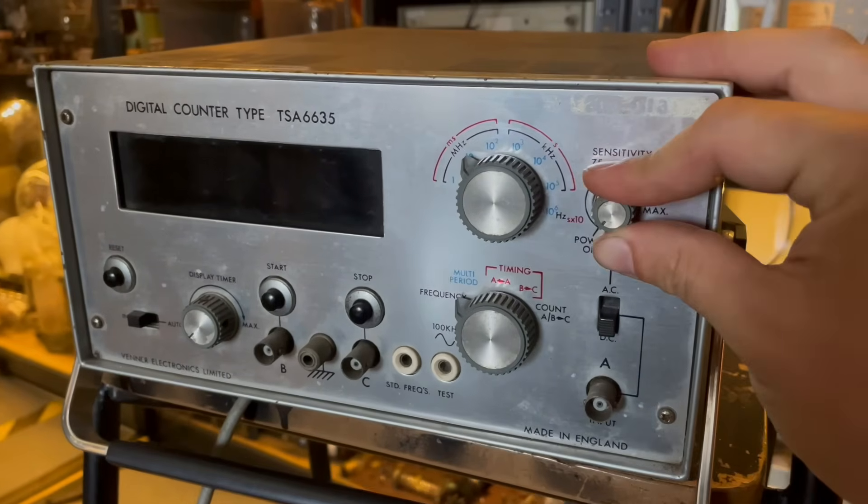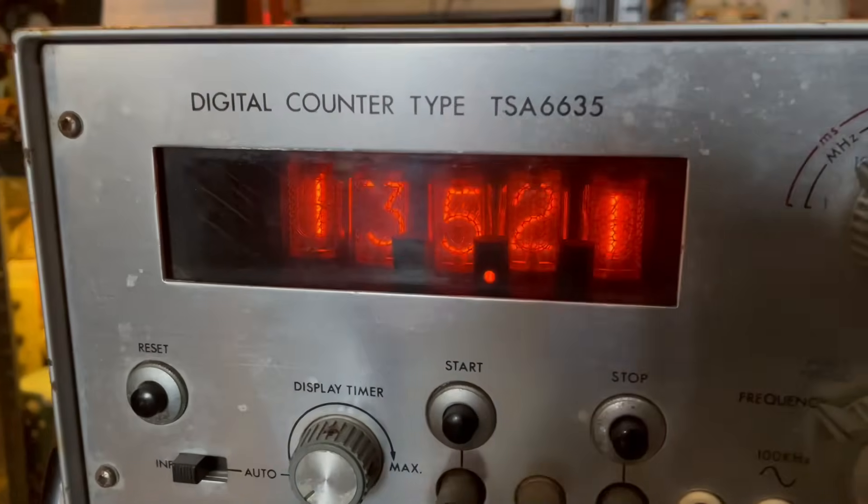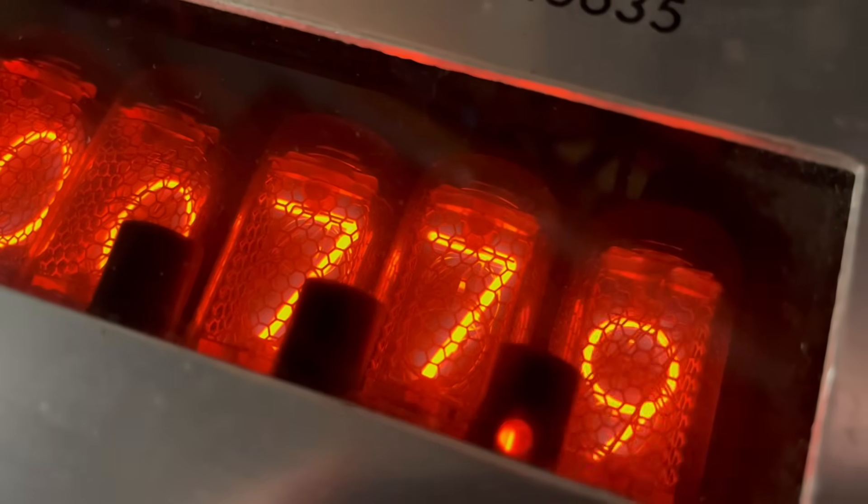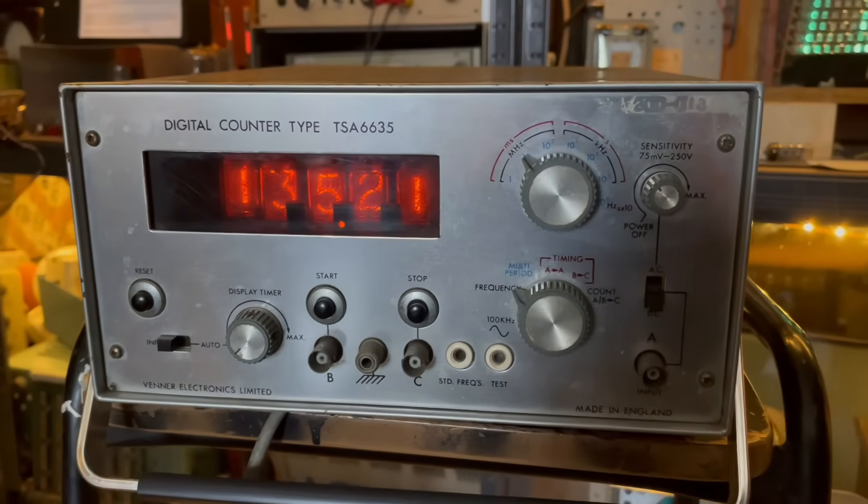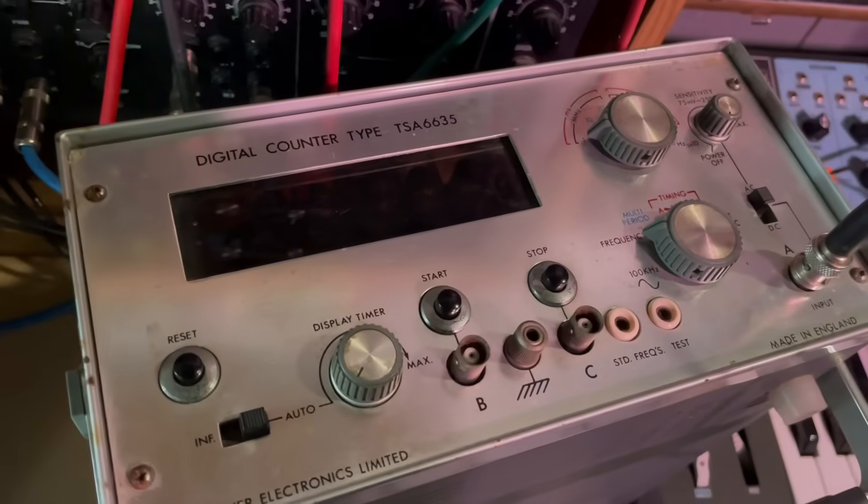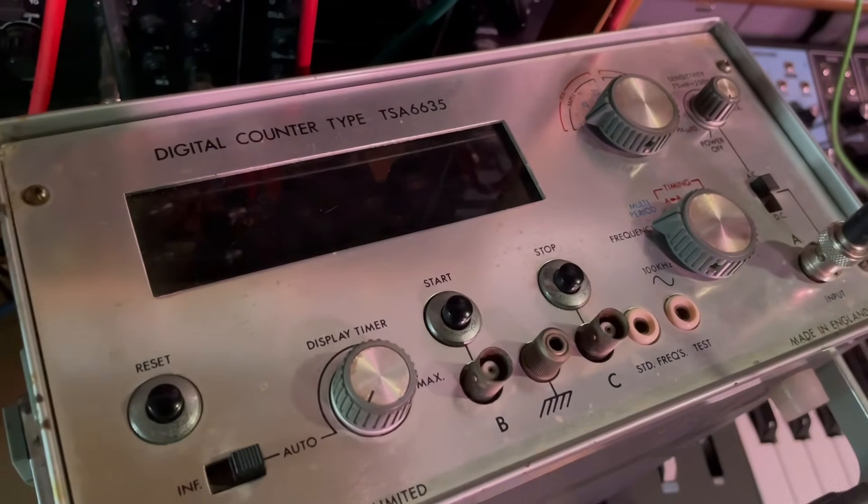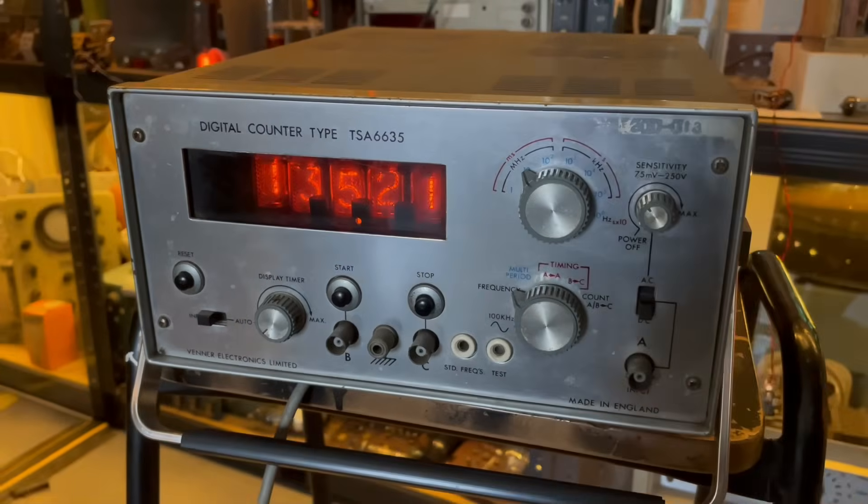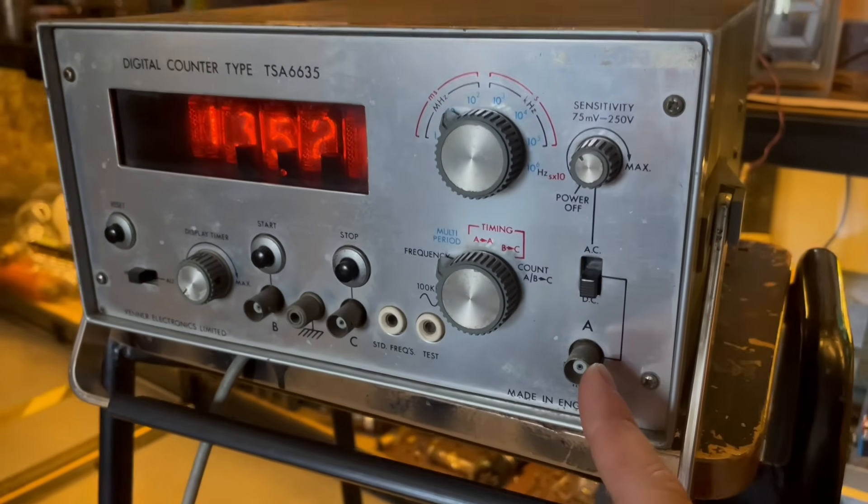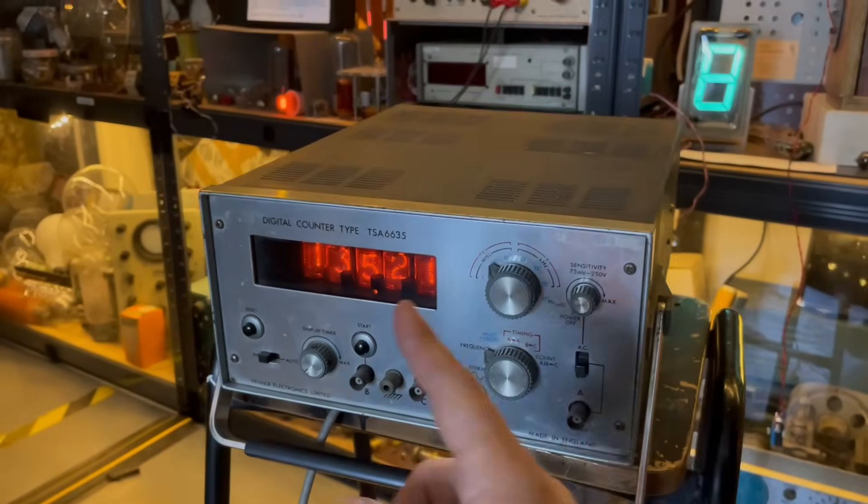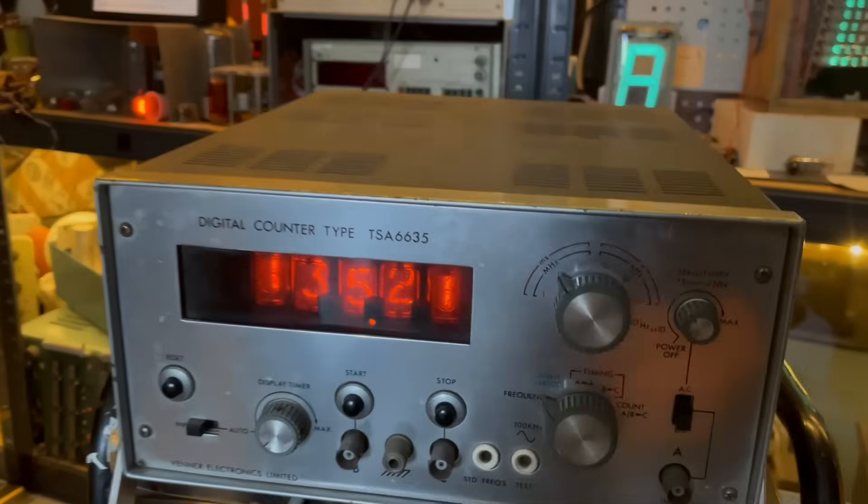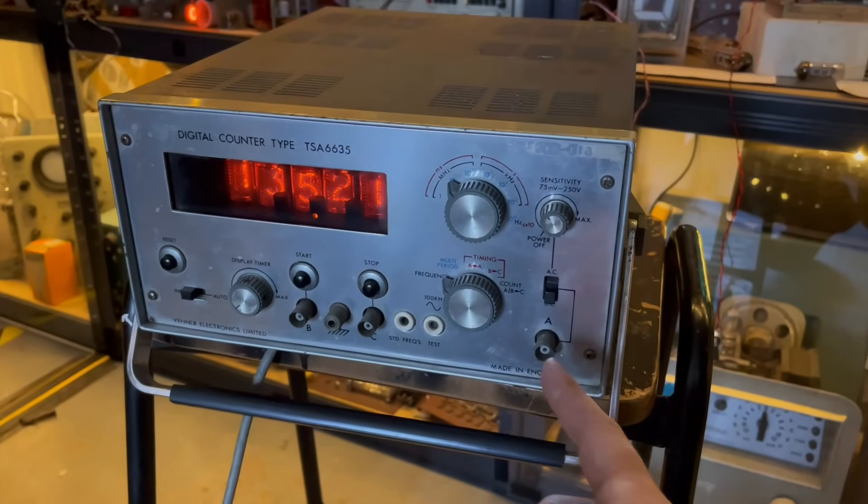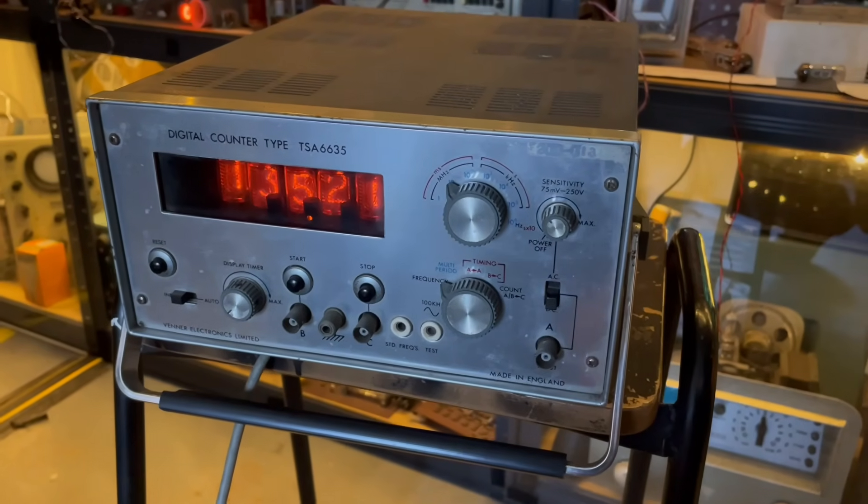This is a digital counter, the TSA 6635. Although the panel may look slightly unassuming, if I twist this knob, oh you know what those are? Nixie tubes. This thing would have sat on your bench as a piece of test equipment for testing whether different pieces of equipment work, or in a scientific lab to conduct experiments.